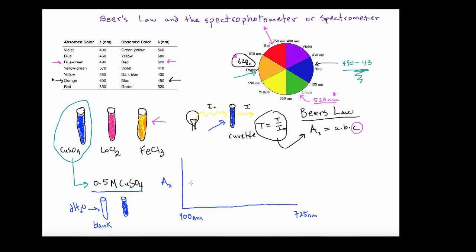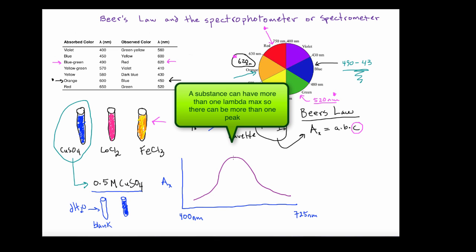And then what you end up doing after you've collected the absorbance data is you plot it. And what you're going to see in the plot, if this was done correctly, is you're going to have a bell curve. And in our case, when we come down for the copper sulfate, this value right here is going to correlate with an absorbance, which is at 620 nanometers.